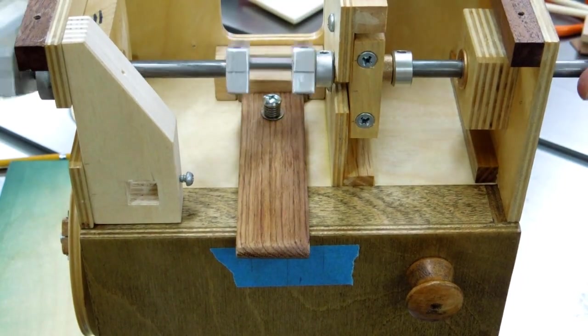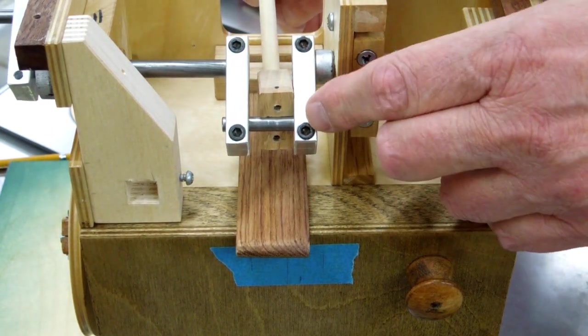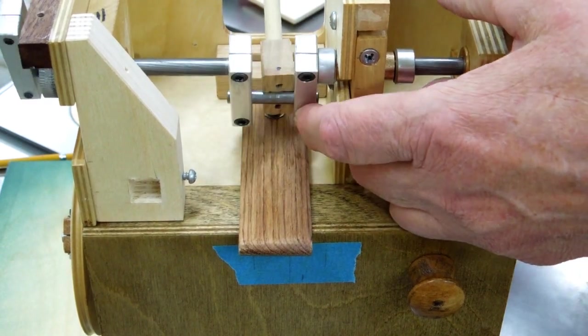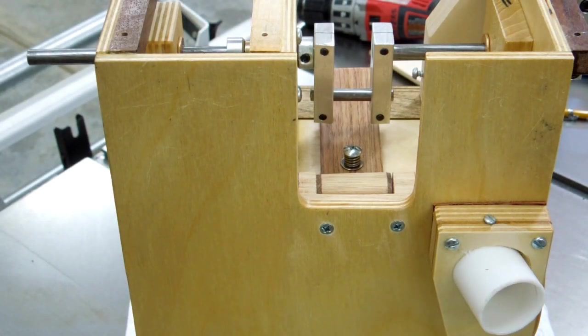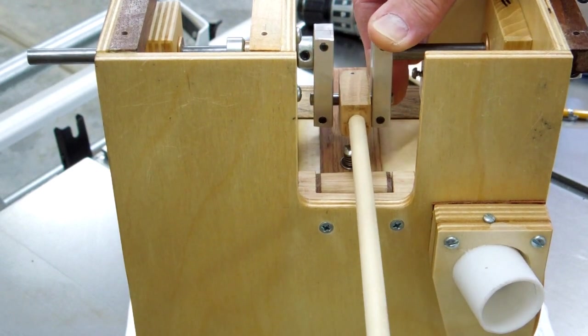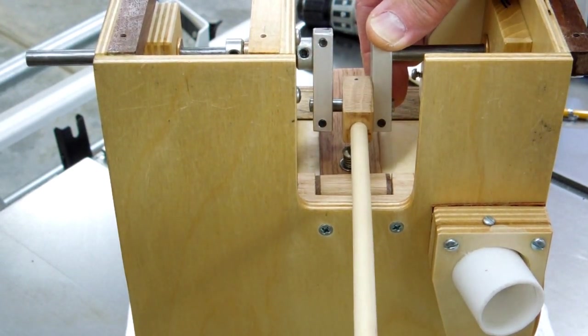Then we want to make sure that this crankshaft and connecting rod will clear. Put the connecting rod on there and I look at it from this side and I can see it clears. I look at the other side and I can see that it clears a good 3/16 of an inch.